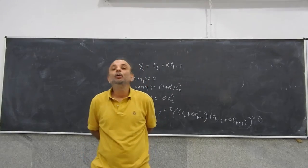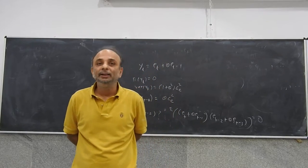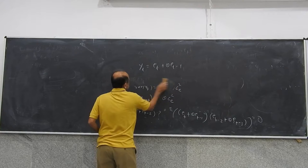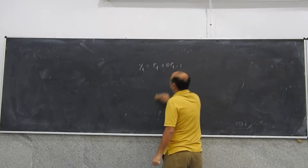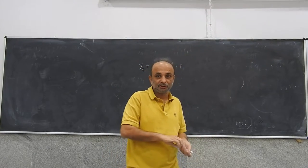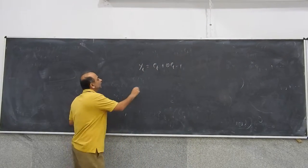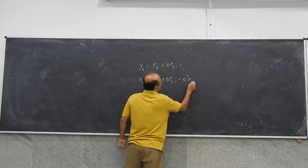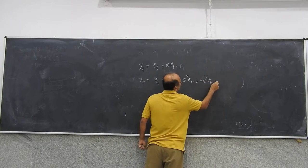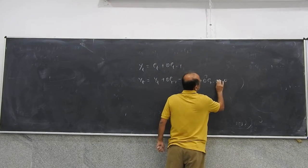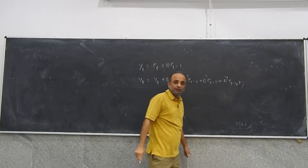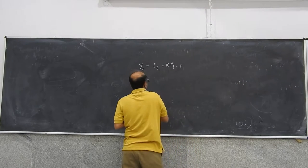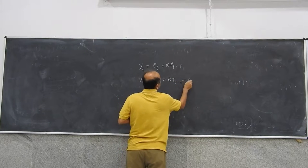Think of an MA(1) process. I could write an MA(1) process as yt = et + θ·et−1. If this is an invertible process, this process can be written as et plus θ·yt−1.